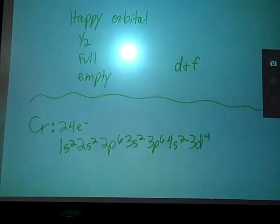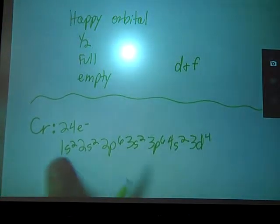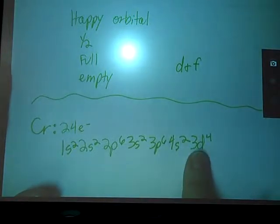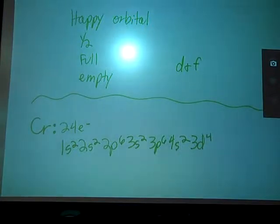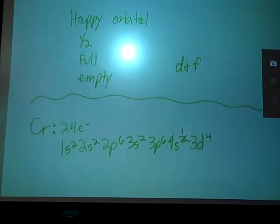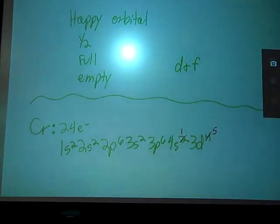So we said that atoms, whenever possible, their orbitals like to be, are more energetically stable, they like to be full, half full, or empty. Well, all of these guys up to this point are full. This guy is almost to half full. Our D orbital can hold a grand total of 5 electrons, so we are 1 electron away from that happy, half full state.